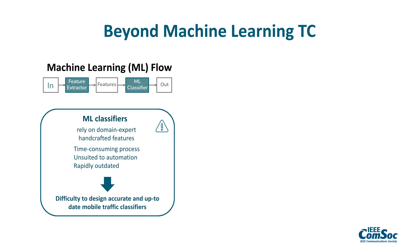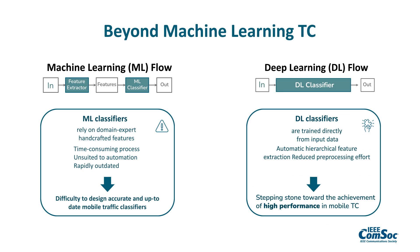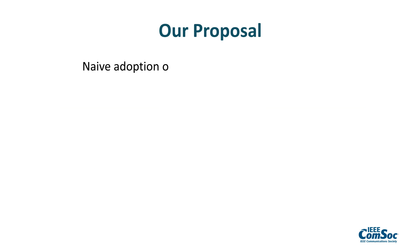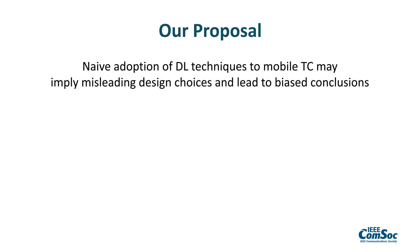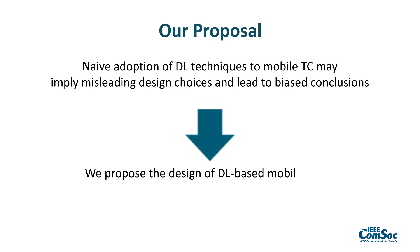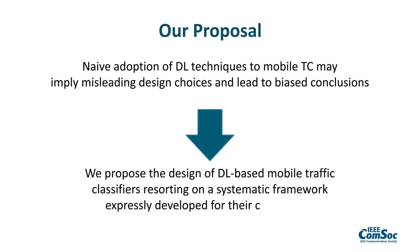Thus, we propose to perform mobile encrypted traffic classification via deep learning classifiers, that are trained directly from input data and are envisioned as a stepping stone toward the achievement of high performance in mobile traffic classification. However, since the naive adoption of deep learning techniques may imply misleading design choices and lead to biased conclusions, we propose the design of deep learning based mobile traffic classifiers resorting on a systematic framework expressly developed for their comparison.